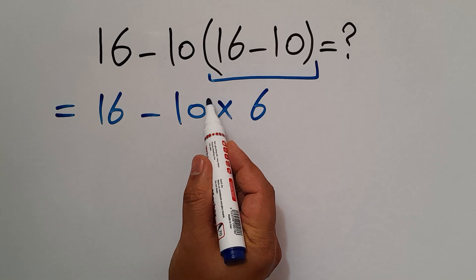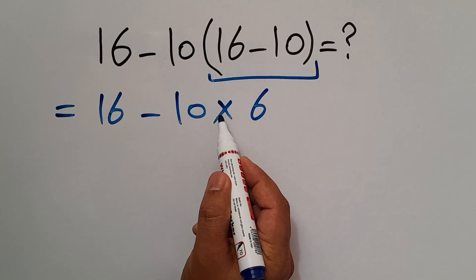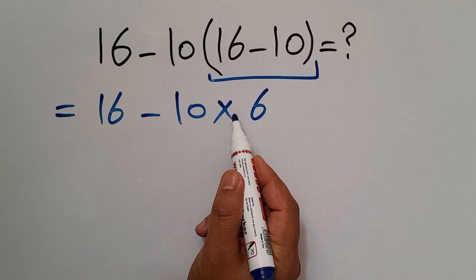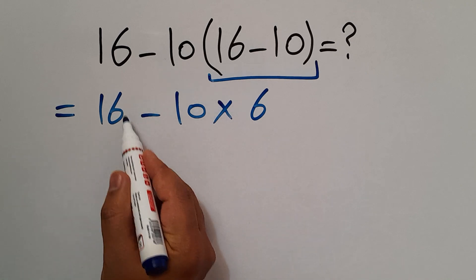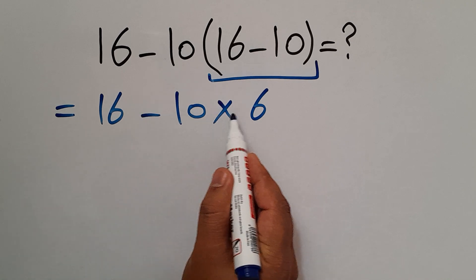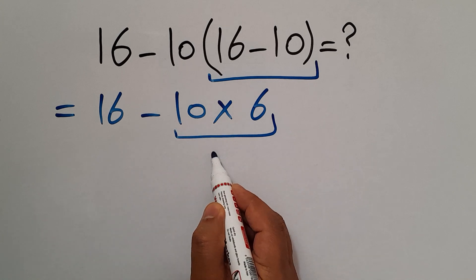Now we have to do this multiplication because according to the order of operations, multiplication has higher priority than subtraction. 10 times 6 equals 60.